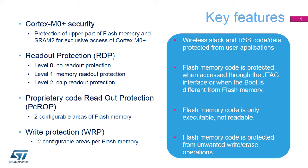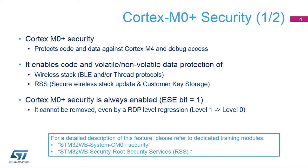RDP, PC-ROP, and WRP are configurable via the STM32-WB option bytes. The Cortex-M0 security features protect firmware code and data running on this core against user applications running on the Cortex-M4 core. This ensures the secure execution of the root security services, or RSS, and wireless stack, as well as prevents debug access. The Cortex-M0 Plus security features are always enabled and cannot be removed, even by an RDP-level regression.